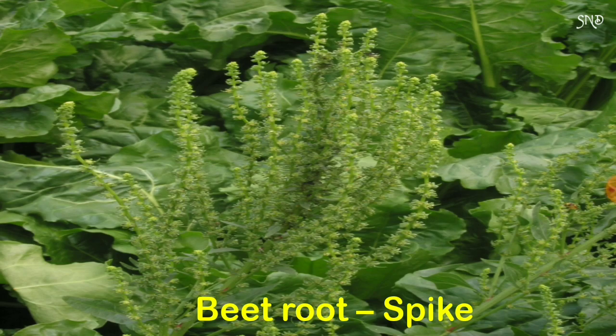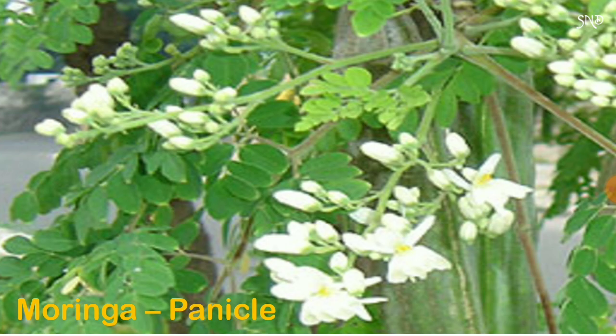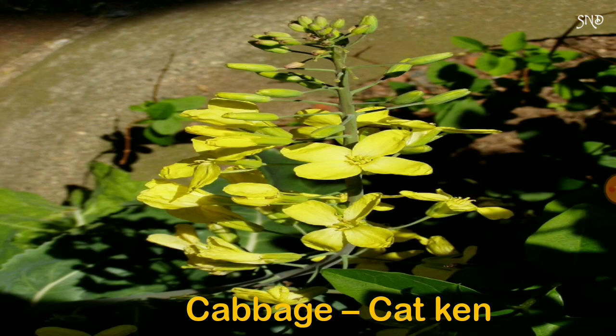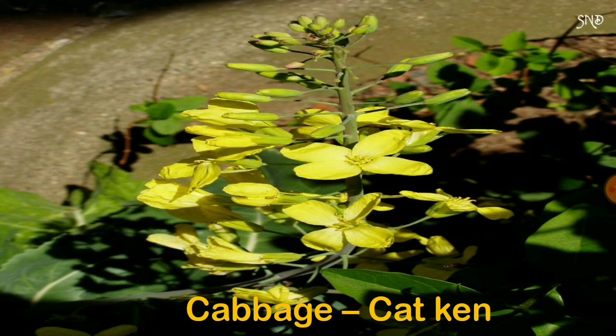In beetroot, the inflorescence is called spike. In coriander, it is umbel. The inflorescence of moringa is called panicle. In cabbage, it is catkin. Thank you.